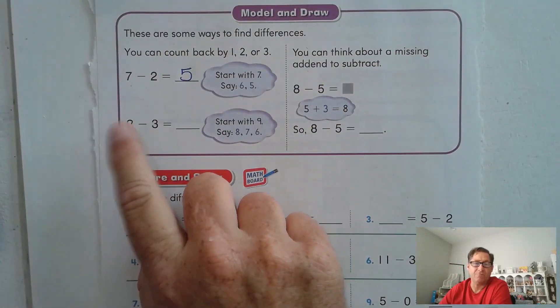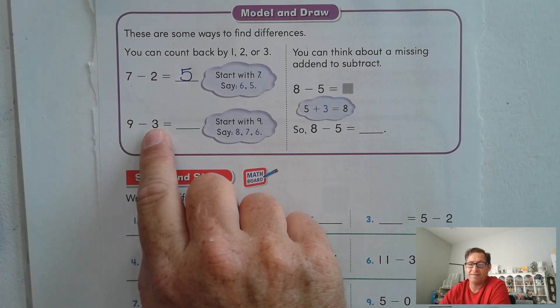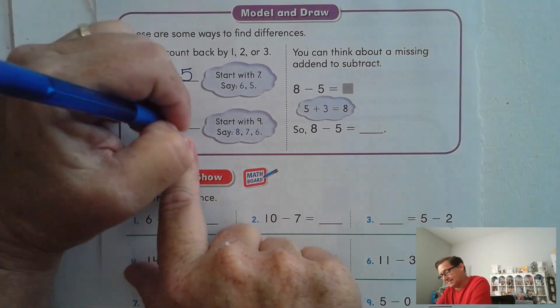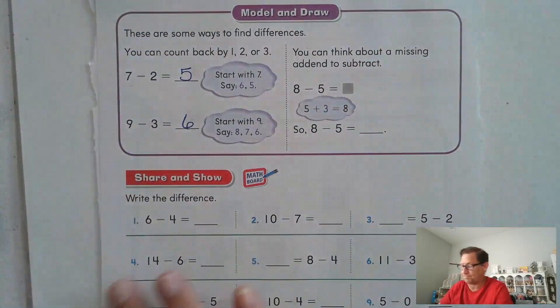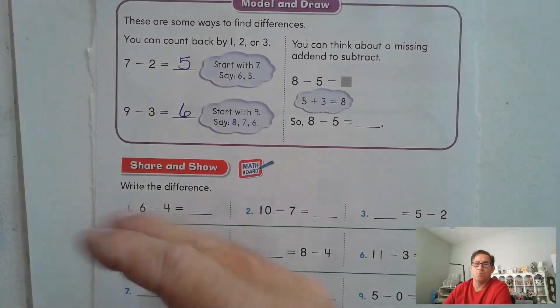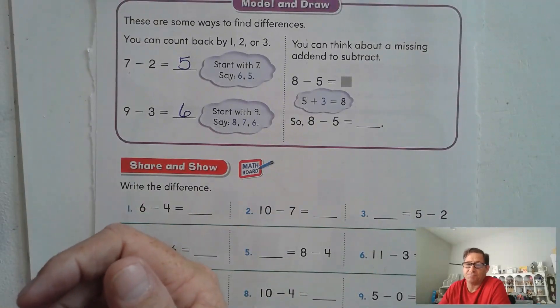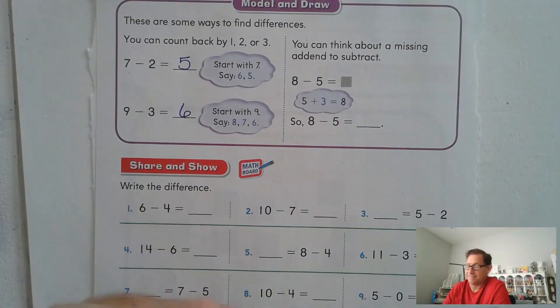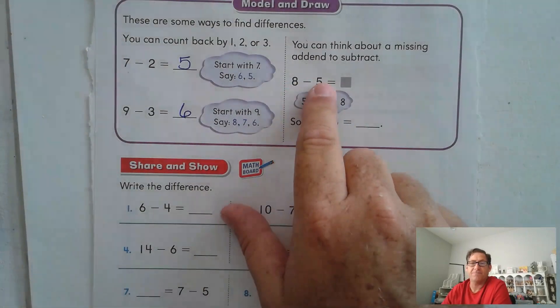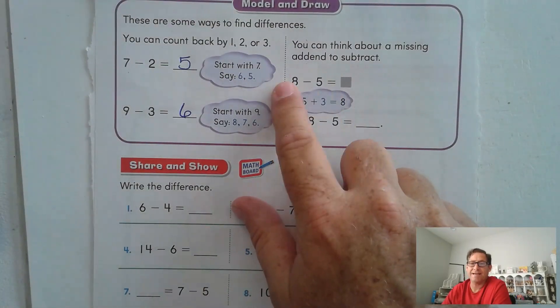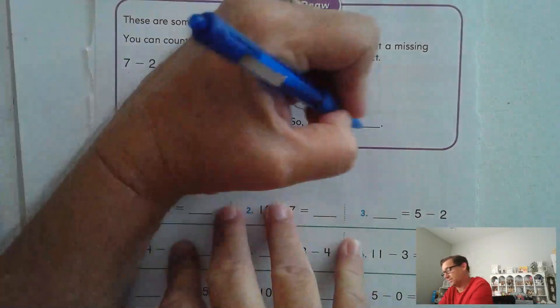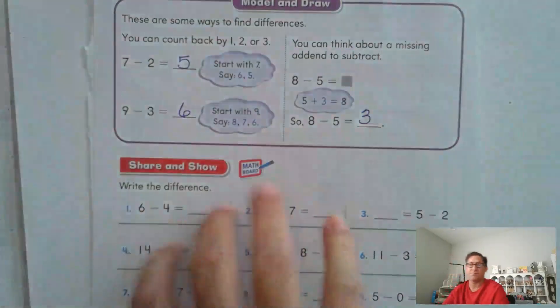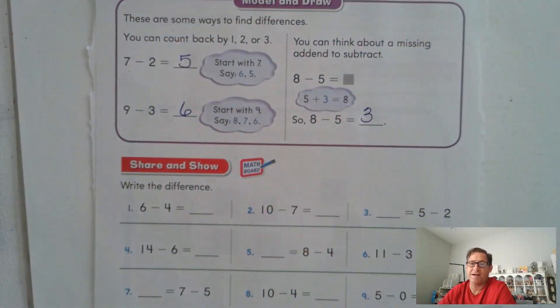9 minus 3. Again, we're starting at 9. So 8, 7, 6. We can also think about a missing addend to subtract, like we practiced in the last lesson. 8 minus 5. 5 plus what is 8? 3, right? 5 plus 3 is 8. So 8 minus 5 is 3.